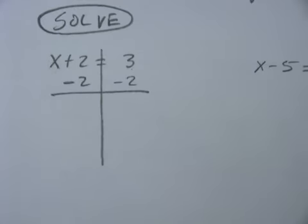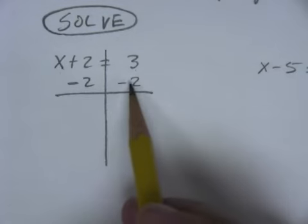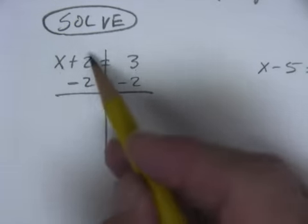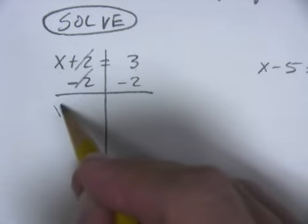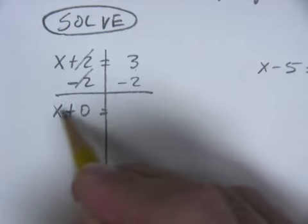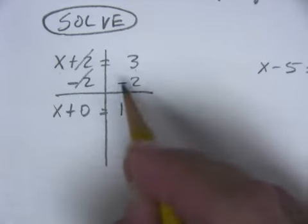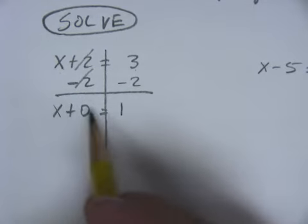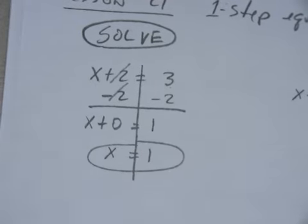So if I subtract two from the left I have to subtract two from the right. Well this gives me zero, two minus two, so then technically you get x plus zero. And then over here do the same thing: three minus two is going to be one. Now we need to know that x plus zero is just plain old x.